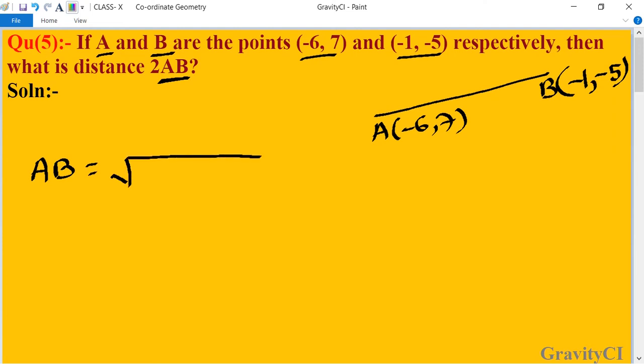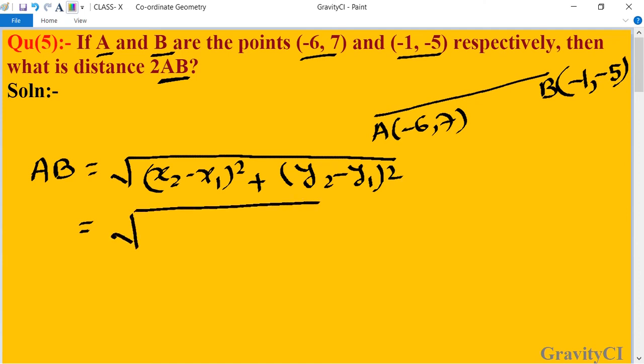√[(x₂ - x₁)² + (y₂ - y₁)²]. Here x₂ is -1 and x₁ is -6, so (-1) - (-6) = 5. And y₂ is -5 and y₁ is 7.